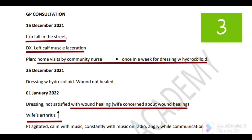His diagnosis is left calf muscle laceration - only laceration was there. Home visits by the community nurse have been arranged once weekly for dressing with hydrocolloid. During your home visit on 25 December 2021, wound was not healed - you can see there is no improvement. On 1 January 2022, you can see the dressing and he is not satisfied with the wound healing. His wife is also concerned about the delayed wound healing.